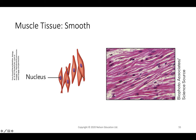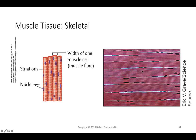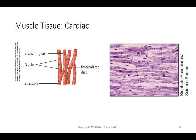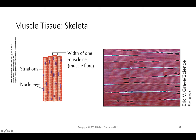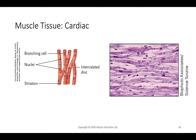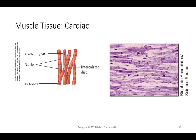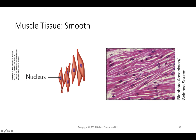Smooth muscle has muscle cells aligned next to each other without visible striations — not as highly organized as skeletal muscle. Cardiac tissue also has striations but uniquely has intercalated discs that allow communication between cells, enabling coordinated contraction. All three types serve as contractile tissue: cardiac contracts constantly with each heartbeat, smooth muscle contracts when needed, and skeletal muscle contracts voluntarily to allow body motion.